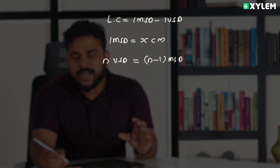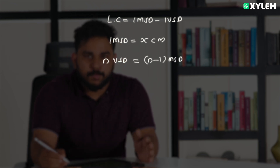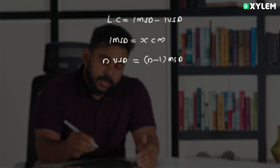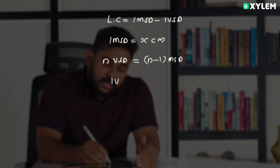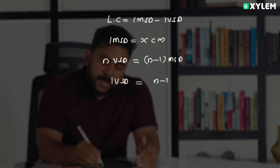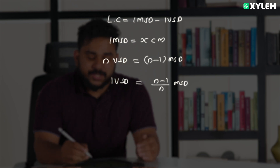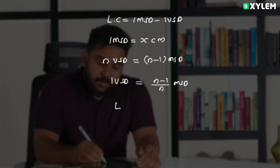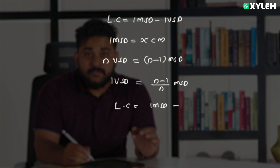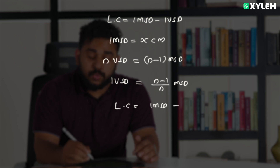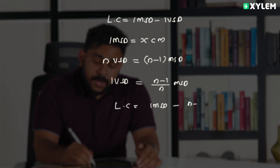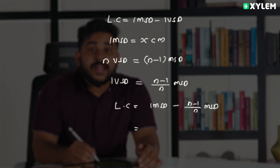Now, how do we approach this data? One Vernier scale division equals (n-1)/n of one main scale division. This gives us the relation: least count = 1 MSD minus 1 VSD = 1 MSD minus (n-1)/n times MSD.